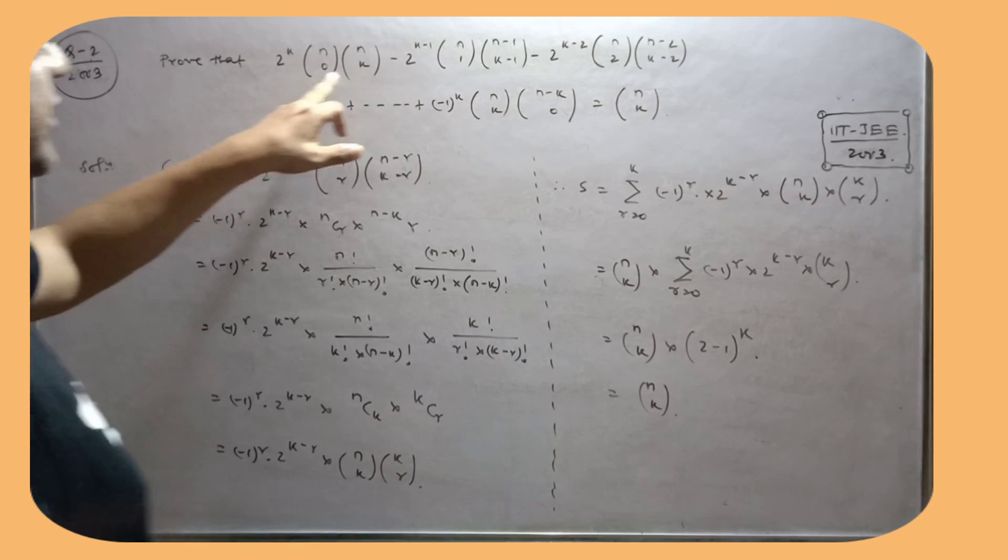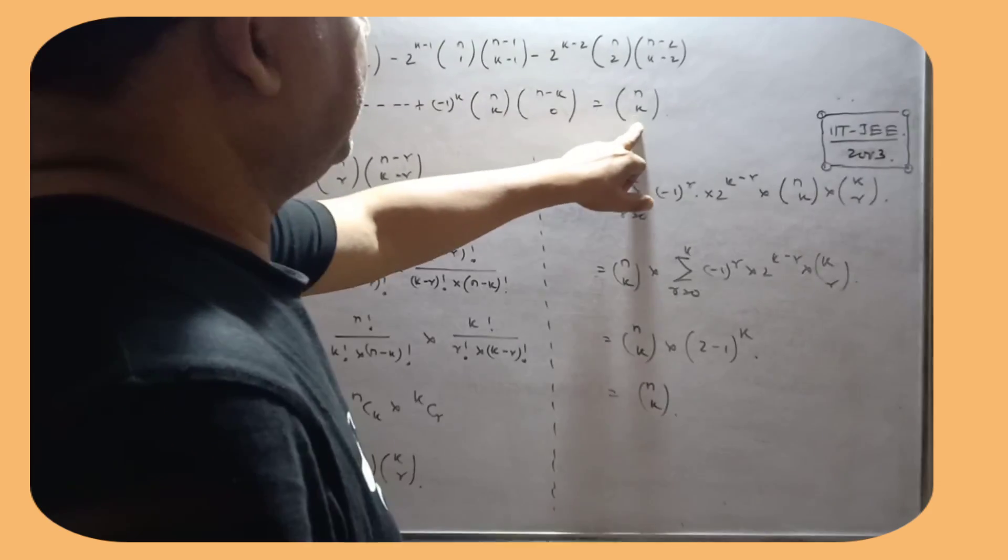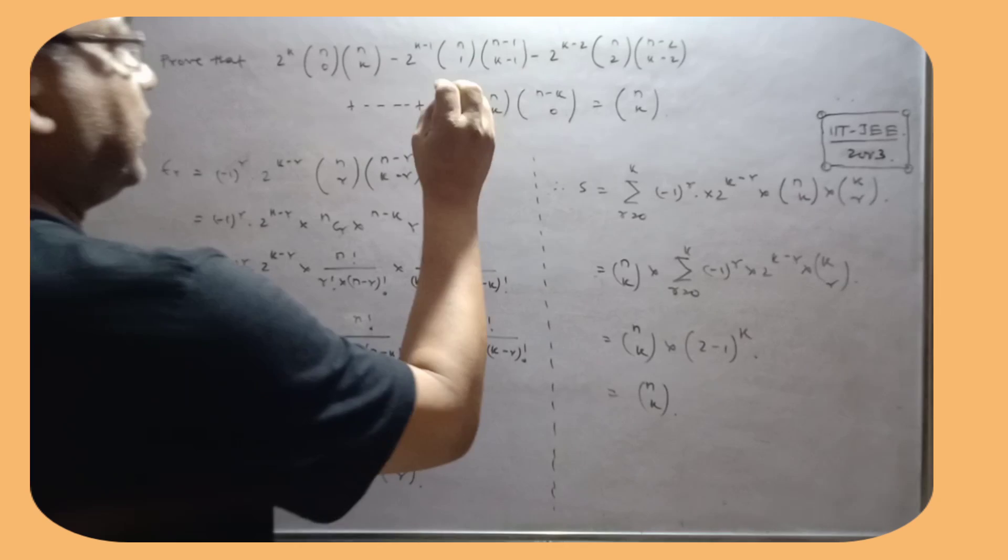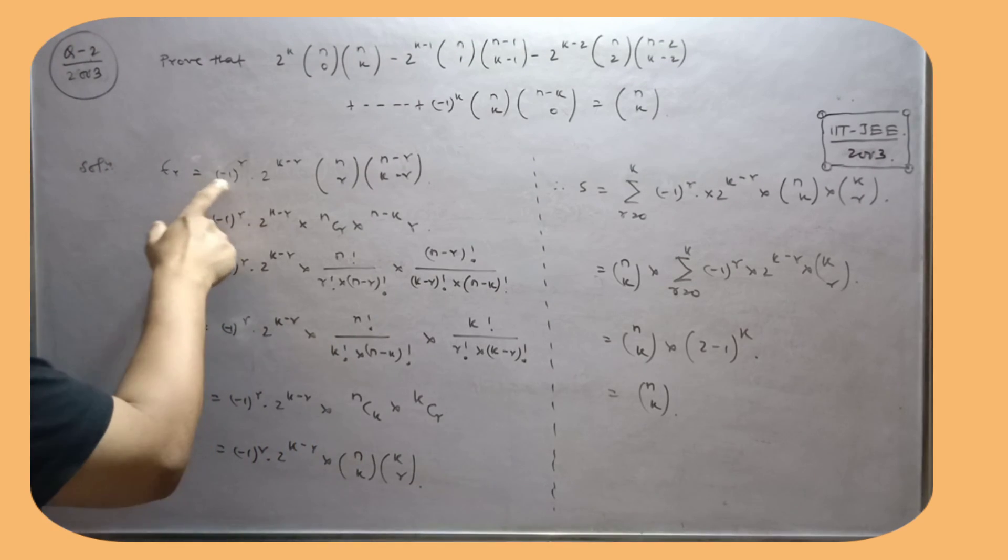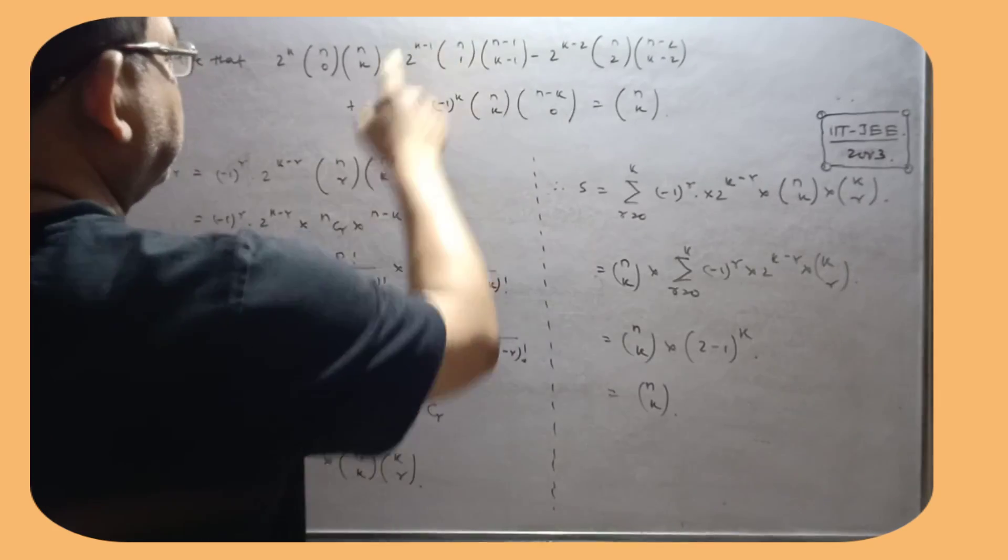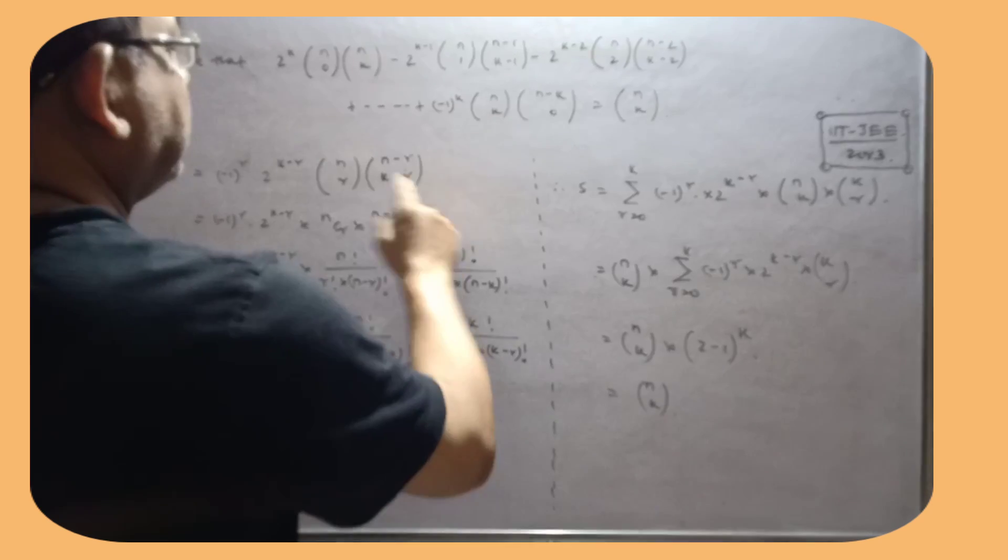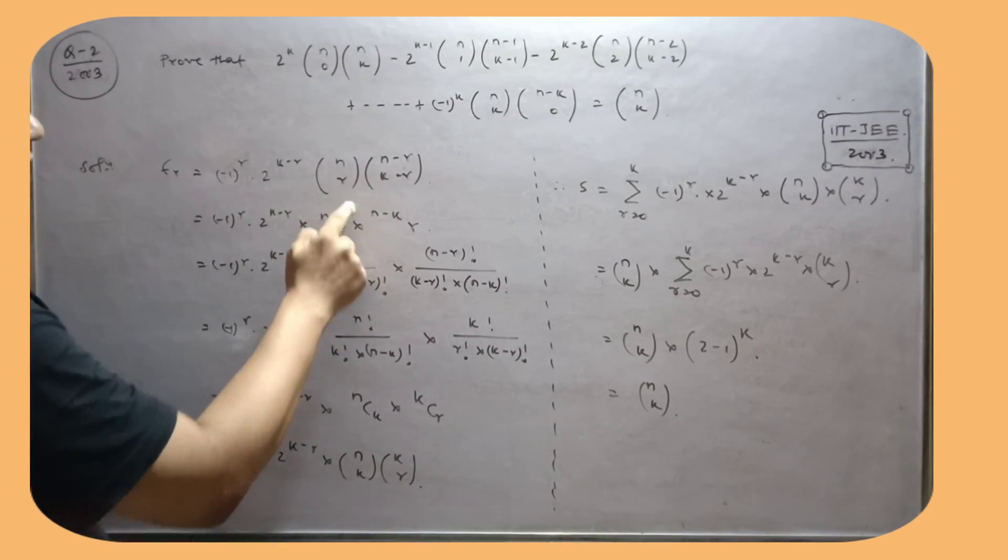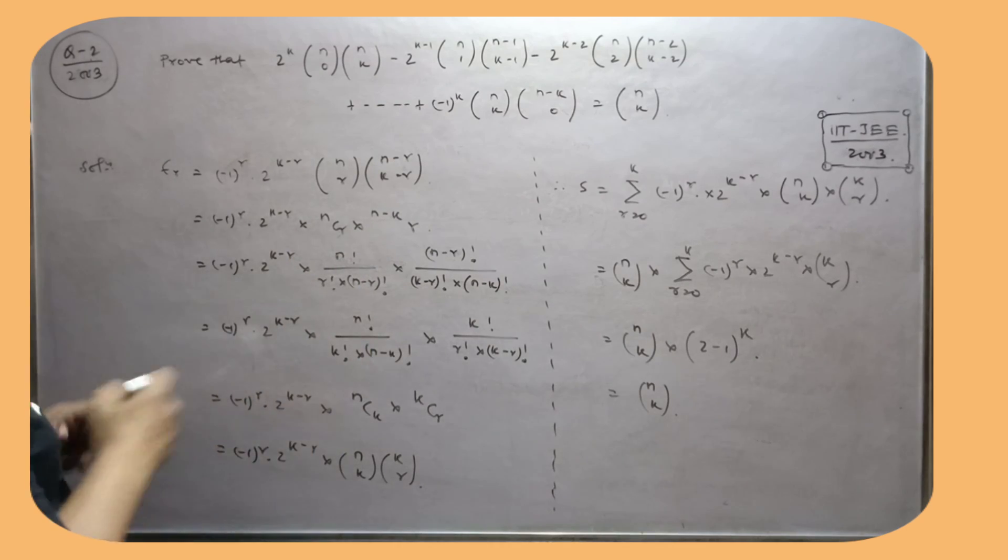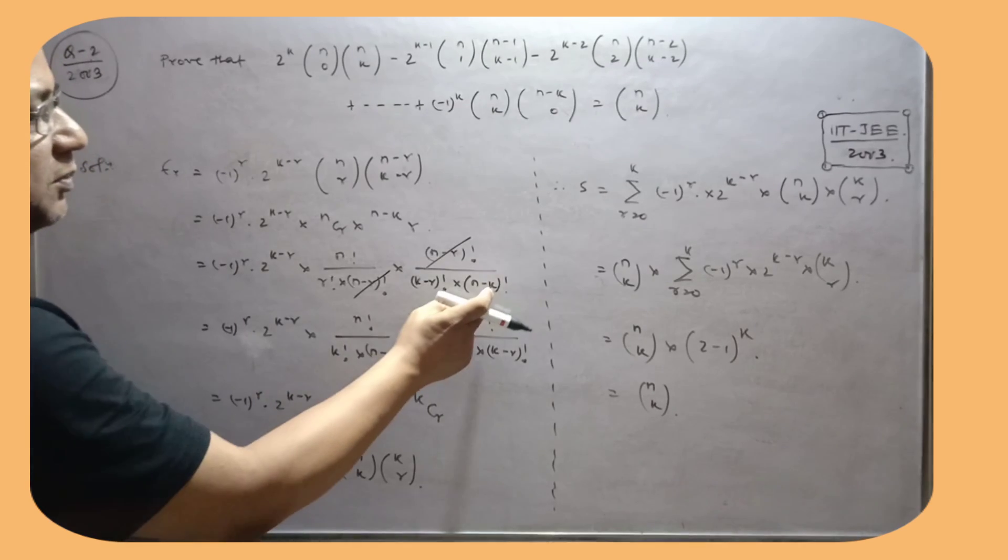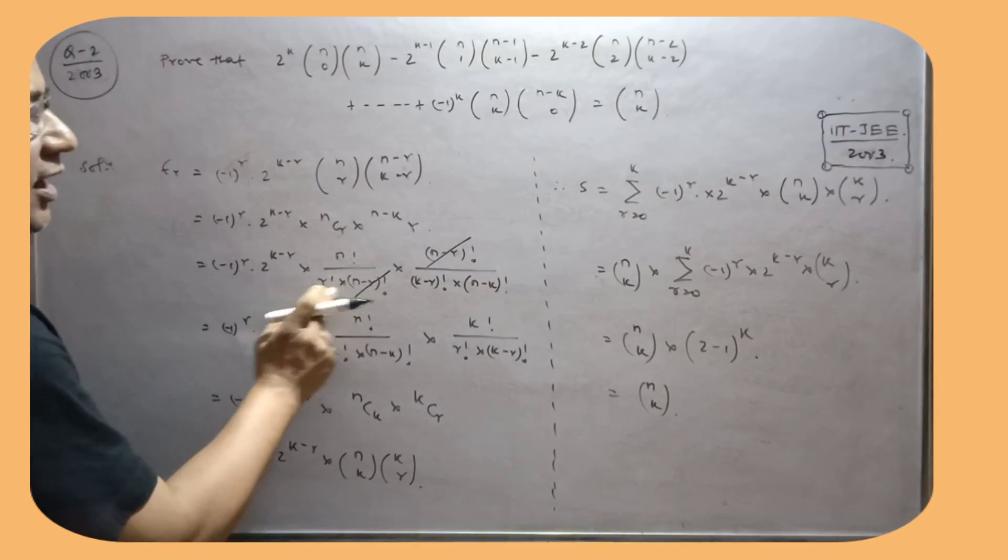Prove that this is going to nCk. When this type of question comes, write the rth term. So this is minus 1 to the power r, this is minus 2k minus r, nCr and (n minus r, k minus r). Break this and factor it. Break the terms, cancel, multiply top and bottom by k factorial, n minus k, r factorial.